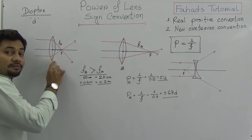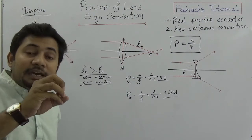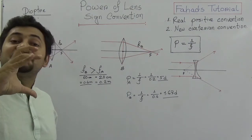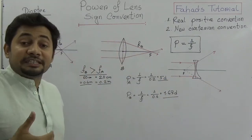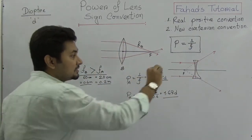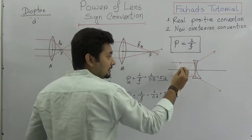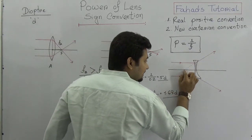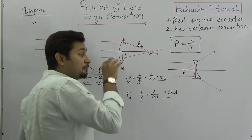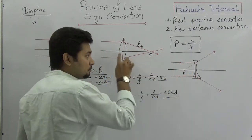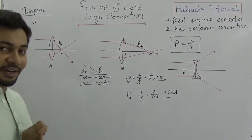A convex lens is known as a converging lens. A concave lens is known as a diverging lens — it diverges the rays, and they meet virtually on the other side. The focal length is on the side where light is coming from. This will become clearer when we talk about the sign convention.